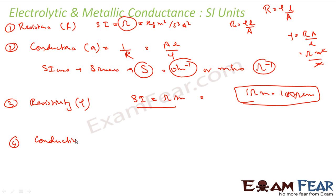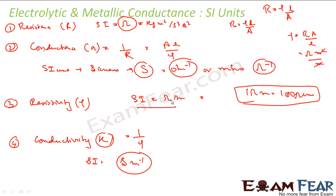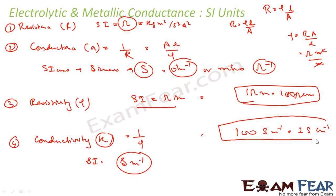Conductivity κ = 1/ρ has SI unit siemens per meter (S/m). Similar to 1 Ω·m = 100 Ω·cm, we have 100 S/m = 1 S/cm. Conductivity of a material is its conductance when it is one meter long and its cross-section is one meter square. These four terms — resistance, conductance, resistivity, and conductivity — and their SI units are essential for solving numericals.